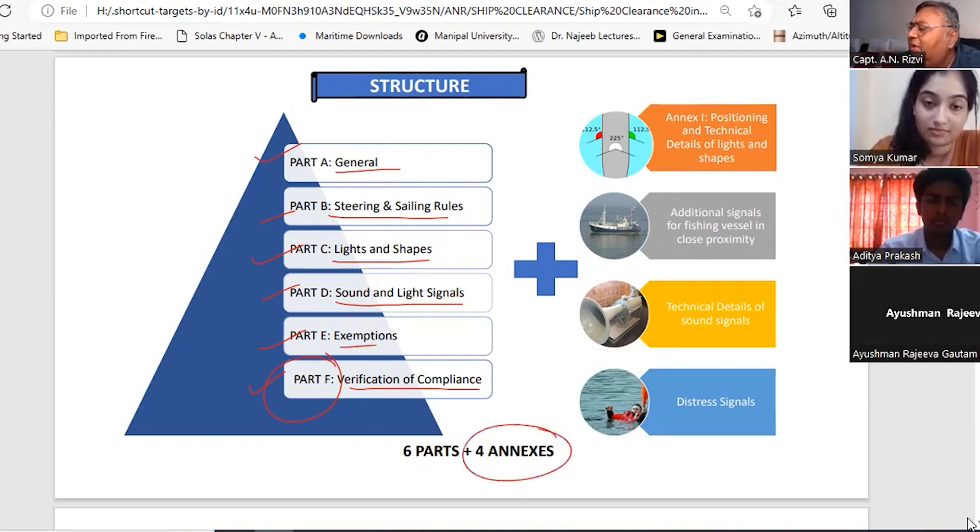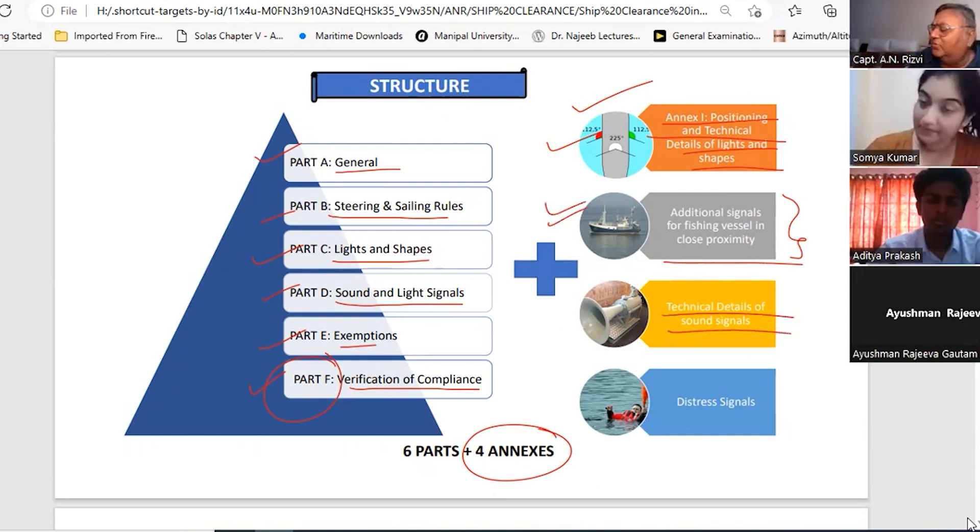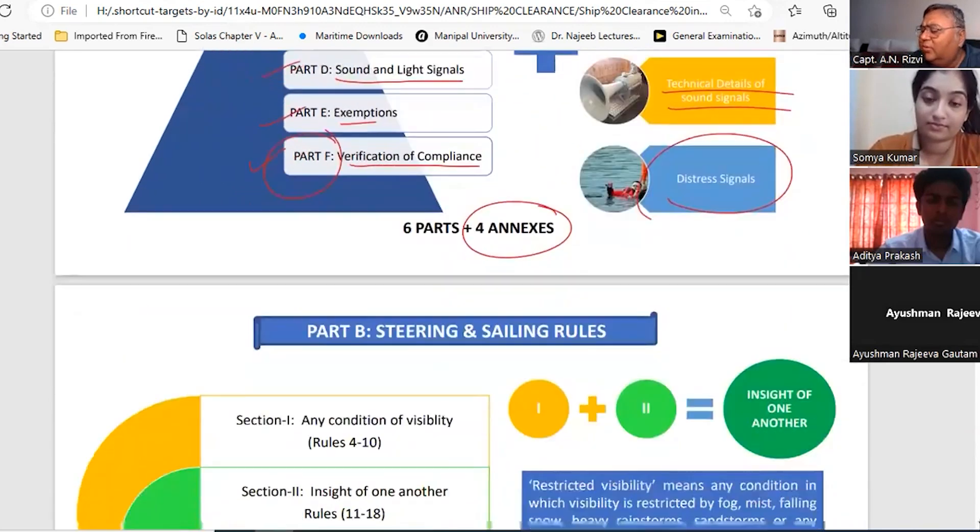Then there are four annexes. The annexes are positioning and technical details of lights and shapes - masthead light, stern light, side lights, etc. Then additional signals for fishing vessels like shooting nets, hauling nets, nets fast upon an obstruction, vessel engaged in pair trawling, etc. These signals are given here. Then the technical details of sound signals - what kind of sound signals you are supposed to make - and the distress signals. By the way, in your oral exam also you should know what kind of distress signal is supposed to be maintained.